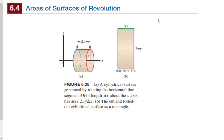Hello and welcome to 6.4 Areas of Surfaces of Revolution. In this video we're going to be looking at how to find the surface area of a curve that is rotated around an axis. We have a horizontal line from A to B rotated about the x-axis, finding the area of that surface — like finding the area of the outer walls of a cylinder. The figure on the right shows that cylinder cut and rolled out to show the surface as a rectangle.